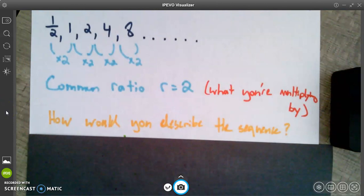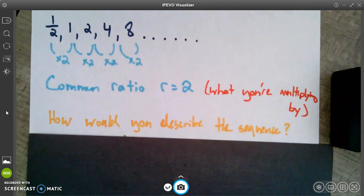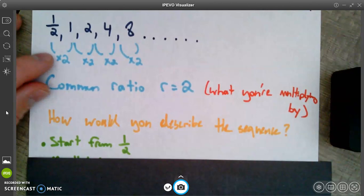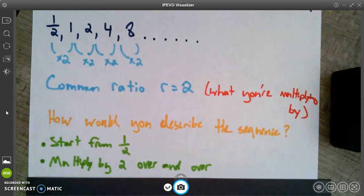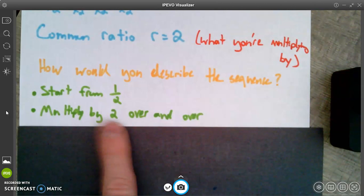You can't just say it doubles every time. You can't say it times by two every time, even though that's important. You need to say that, but you can't just say that. You need to know two things. Hopefully you thought of this. Where am I starting from and what am I doing each time? If you know those two things, you can describe this sequence or any sequence, but definitely geometric sequences.